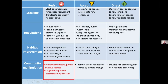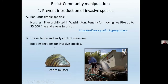Under community manipulation in the resist category, we might try to prevent, extirpate, or suppress an invasive fish species. One approach is to simply ban those undesirable species from being present in an area. For example, in Washington state you are prohibited from having northern pike in your possession, and moving them from one area to another can result in a $5,000 fine or even a year in prison. We definitely don't want people moving pike and establishing them in new areas — so we ban their possession to keep them out of the regional species pool.